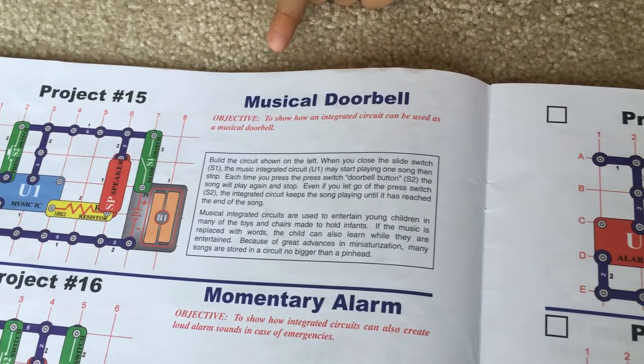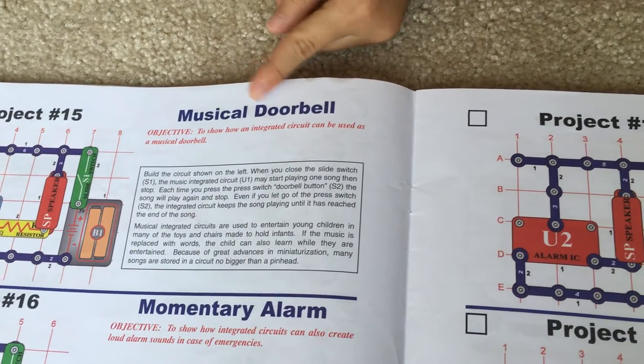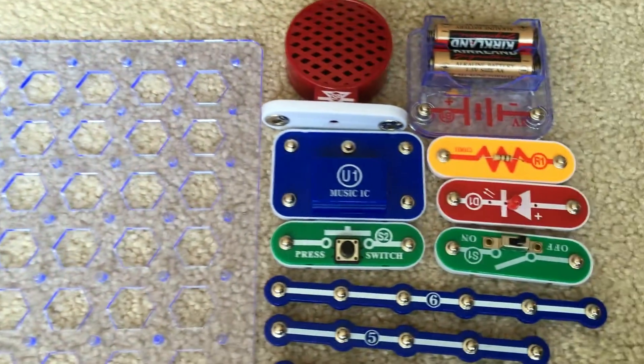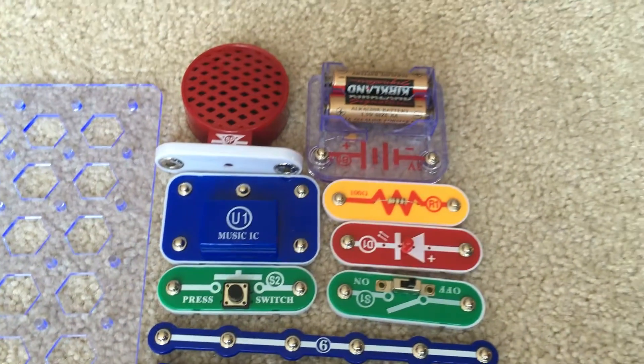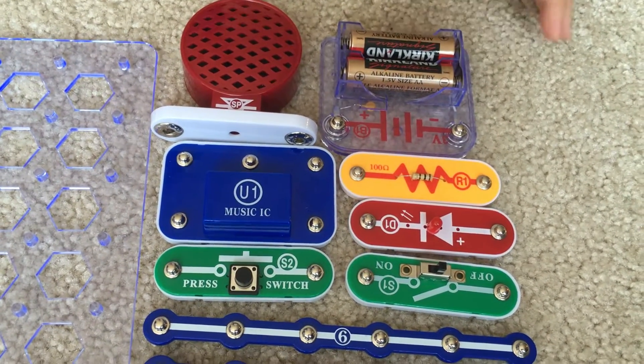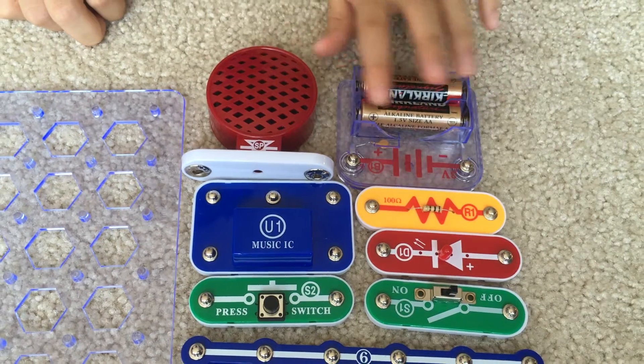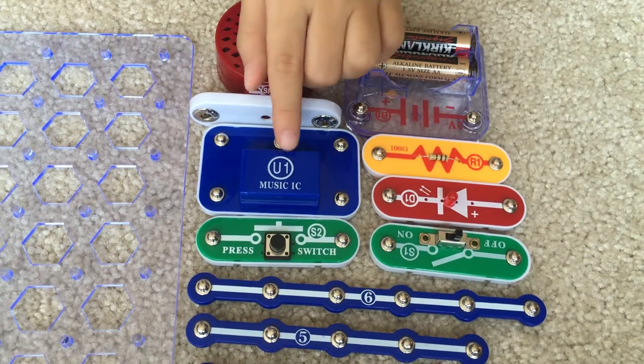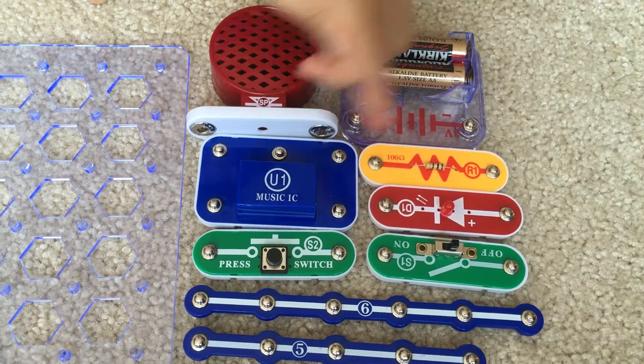The objective is to show how an integrated circuit can be used as a musical doorbell. The materials we'll need are a battery socket with two AA batteries, a speaker, a U1 musical IC, and a resistor R1.